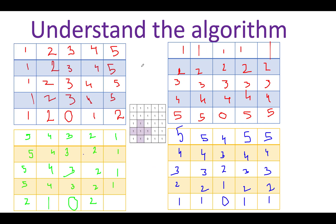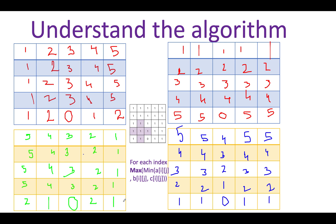We have now calculated data by iterating in all four directions: left to right, right to left, top to bottom, and bottom to top. Once you have this data, the answer is equal to the maximum value out of the minimum value across all four matrices at each index. Mathematically: max(min(A[i,j], B[i,j], C[i,j], D[i,j])).